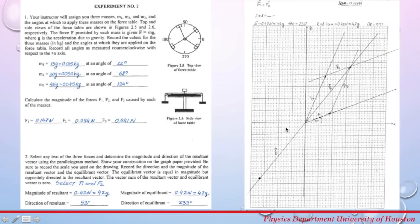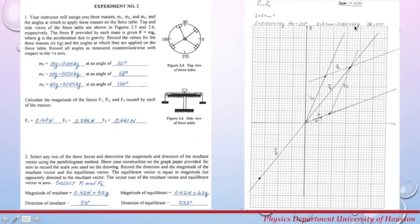Construct a coordinate system. Draw a 3 cm line at 22 degrees from the positive x-axis for vector 1. Then draw vector 2, a 6 cm line at 68 degrees from the positive x-axis. Complete the parallelogram; the resultant is the longer diagonal. To find the magnitude and direction, use a ruler to measure the length of the resultant — I measured 8.4 cm, which converts to 0.42 newtons using the scale.